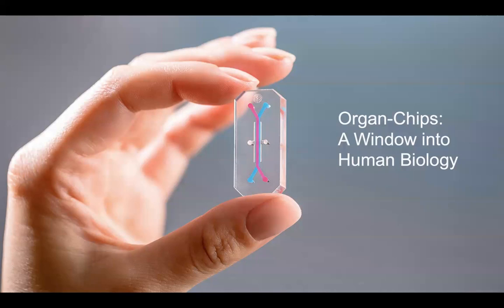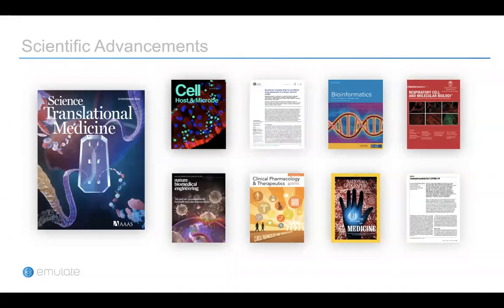This is where organ chips come in. We want to offer this technology as a next-generation platform — a window into human biology — to provide a more predictive platform to study human physiology and diseases. Here are some examples of our scientific publications leveraging organ chip technologies. Specifically, in 2019 we published a paper in Science Translational Medicine showcasing how species-specific liver chips were able to more accurately predict toxicity in vivo and detect various mechanisms of toxicity from the chips.